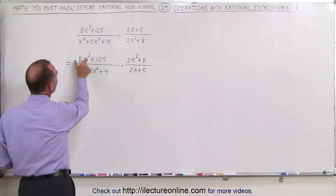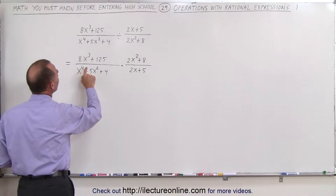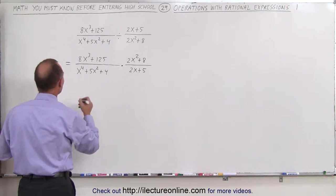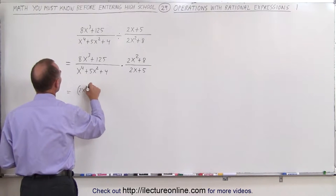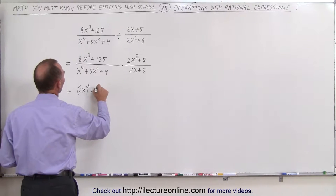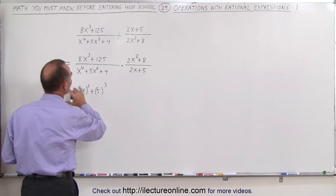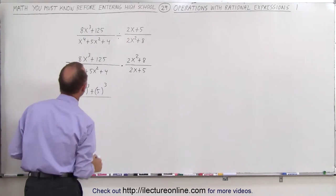The first one is because this is the sum of two cubes. This can be written as, let me rewrite it, as 2x quantity cubed plus 5 quantity cubed. So this becomes the sum of cubes divided by,